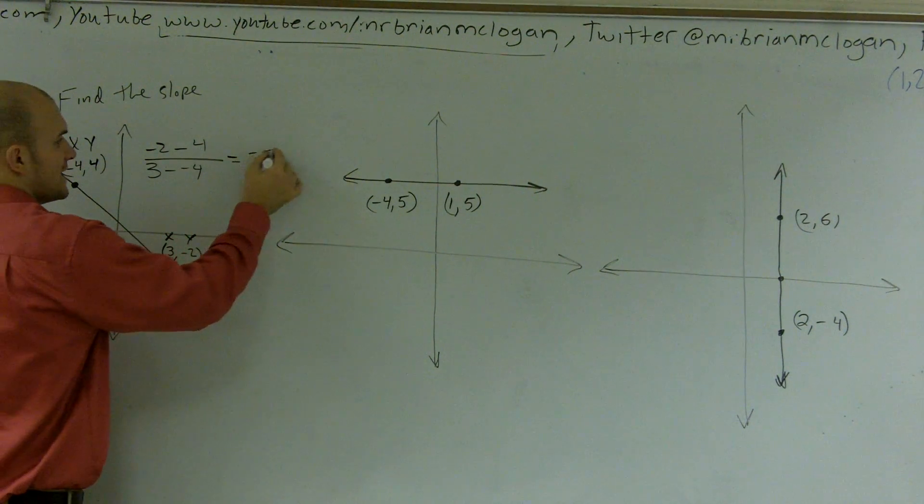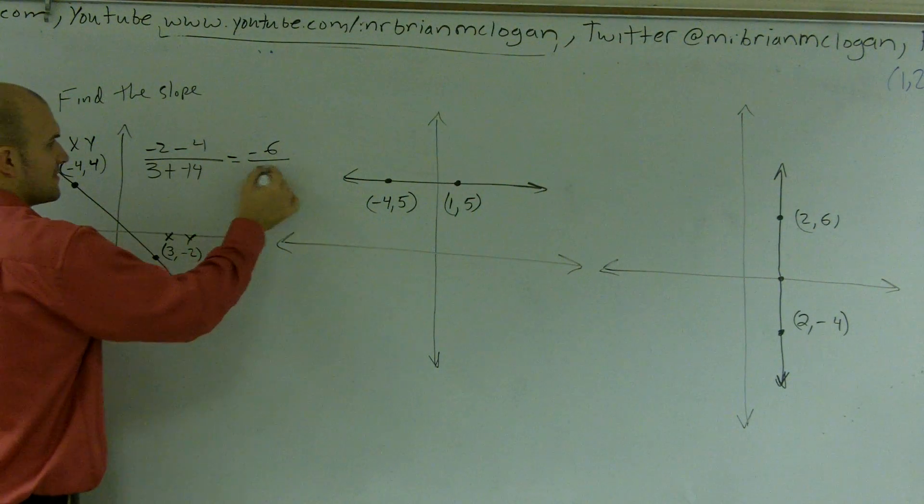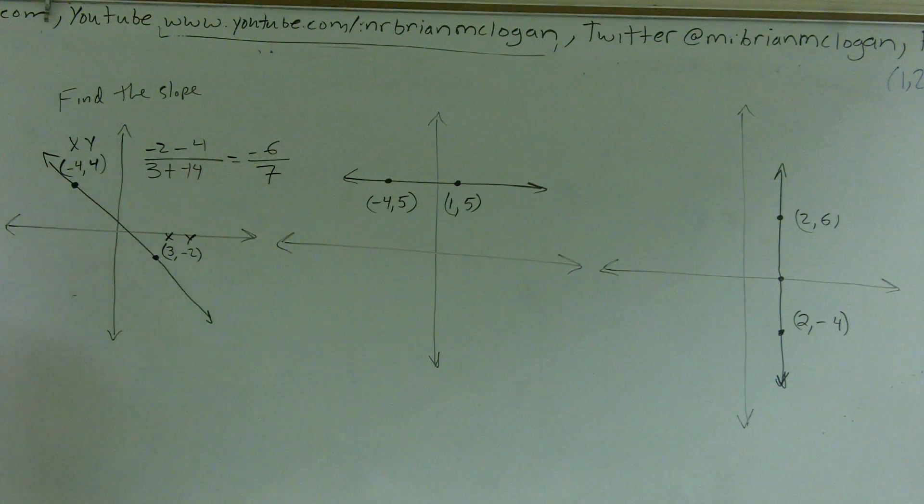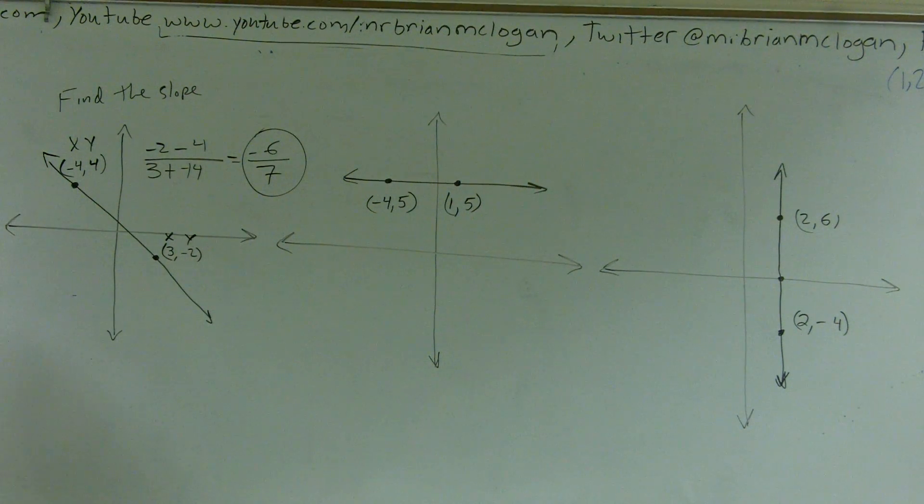So negative 2 minus 4 is negative 6 over, this becomes a double negative which becomes 7. So your answer is negative 6 sevenths. Excuse me, pardon me to rush in.